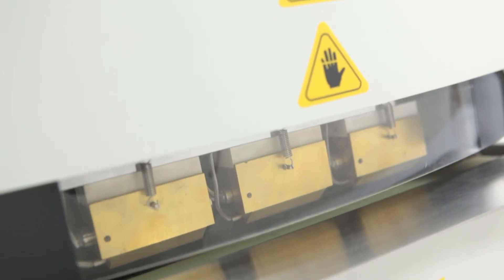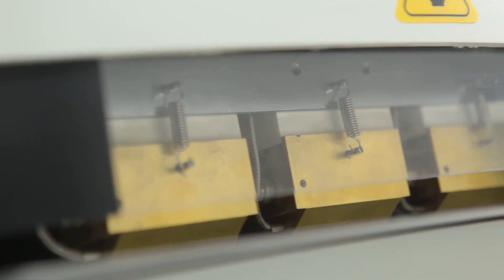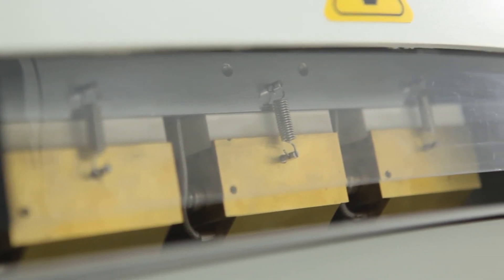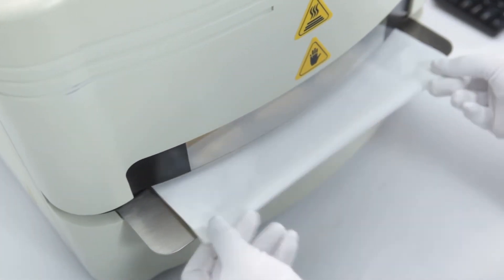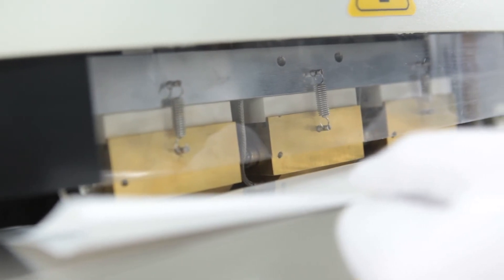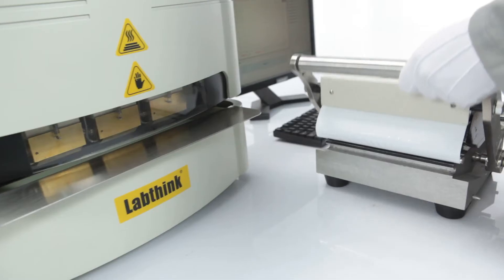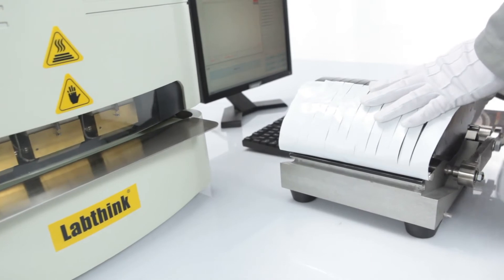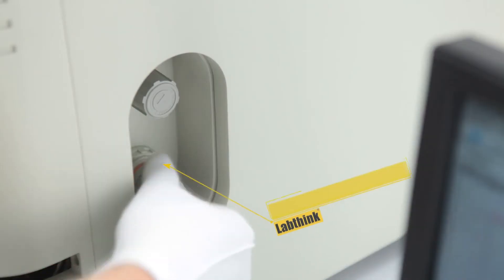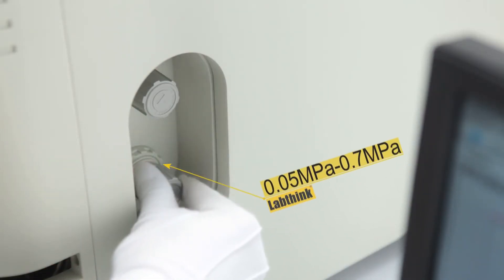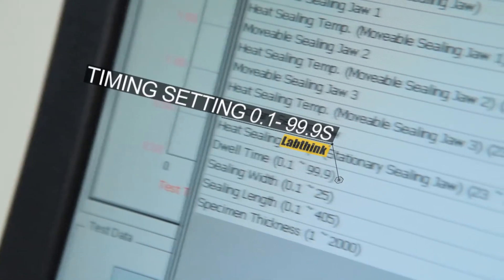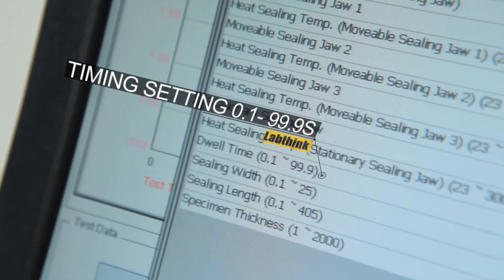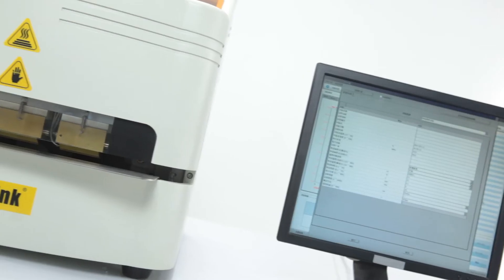i-Thermotech 2400 is equipped with three groups of upper sealing jaws and one group of lower sealing jaws that can all control the temperature independently. Thus the sealing tests of six specimens in three groups can be achieved in one single test.